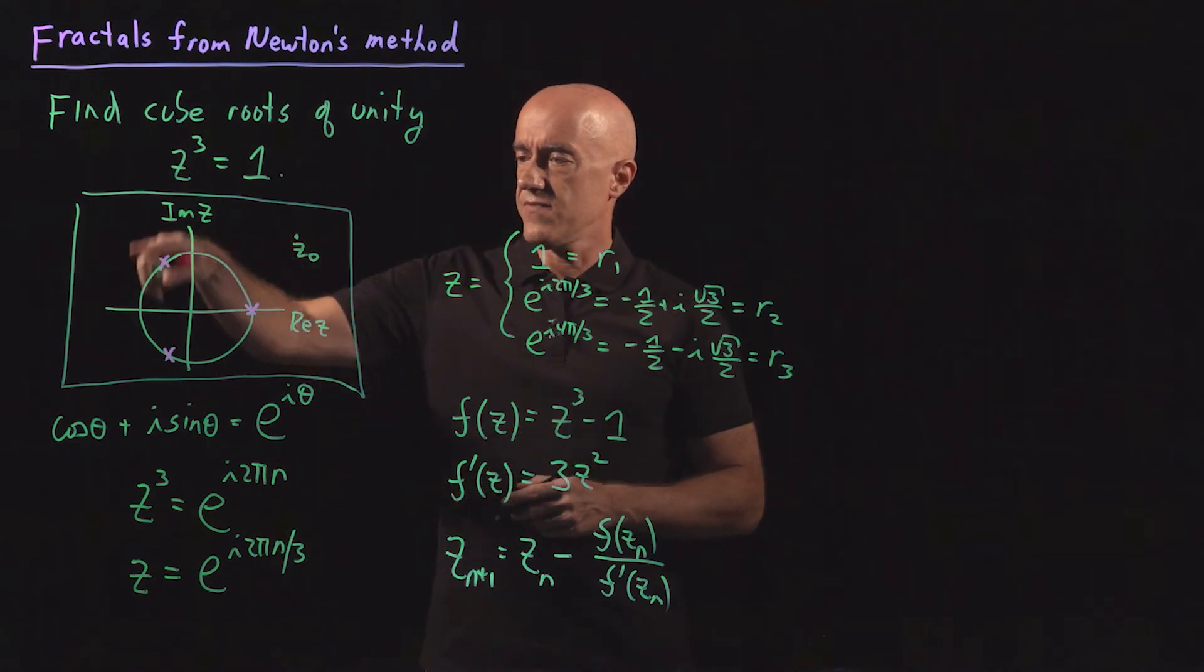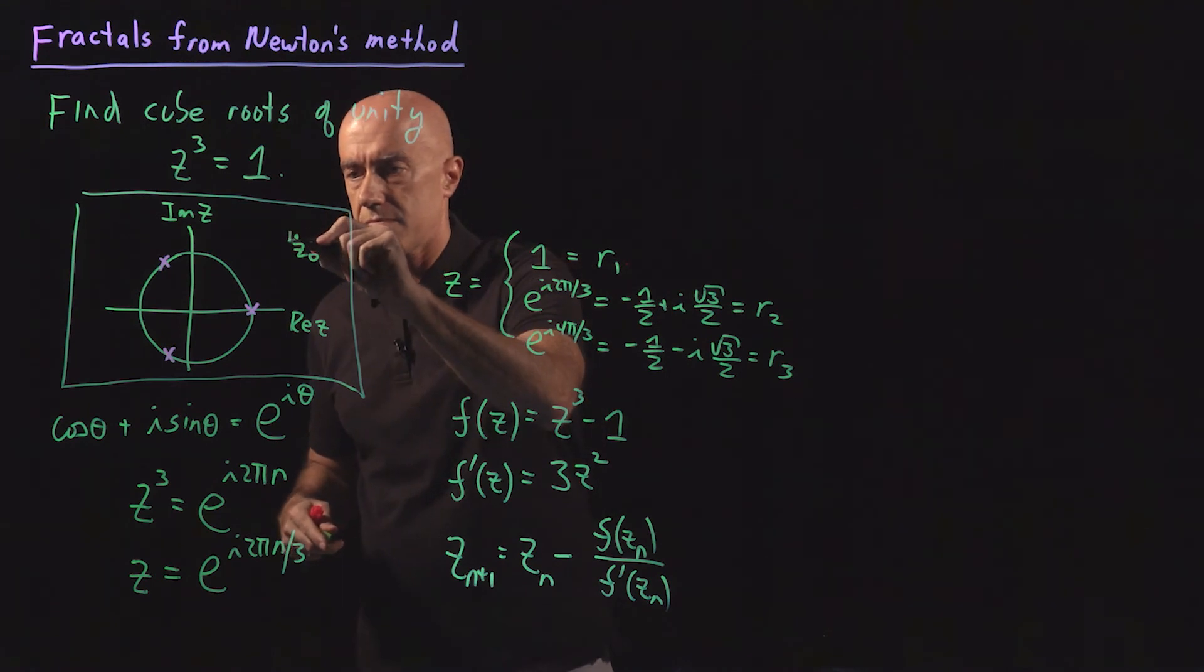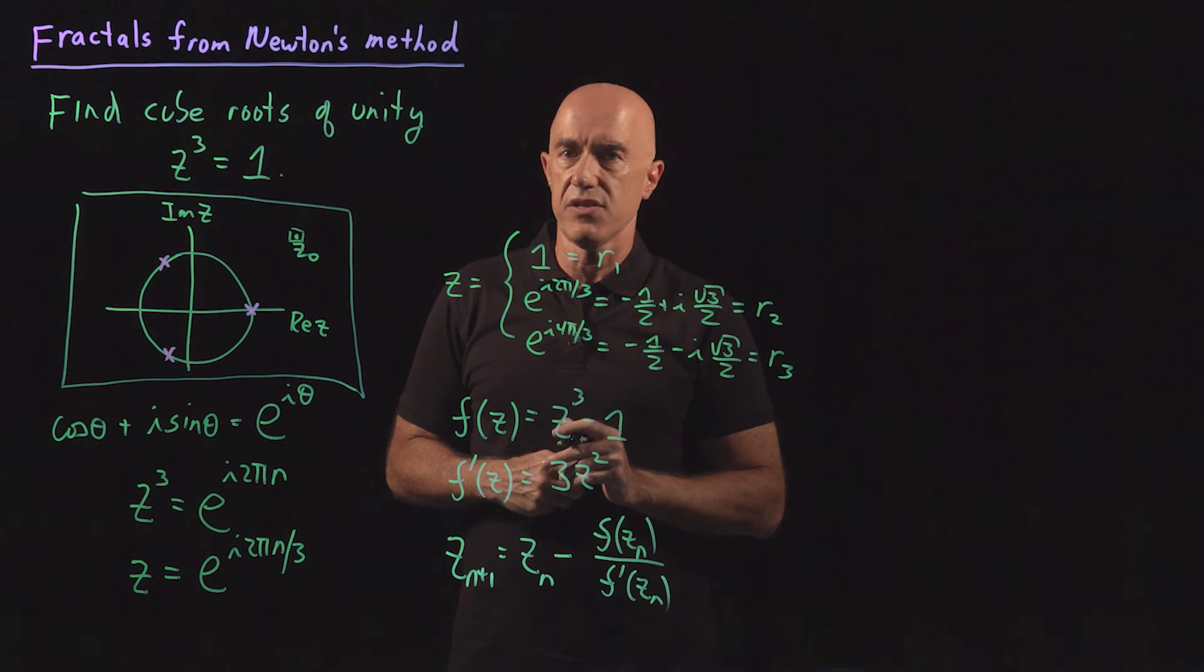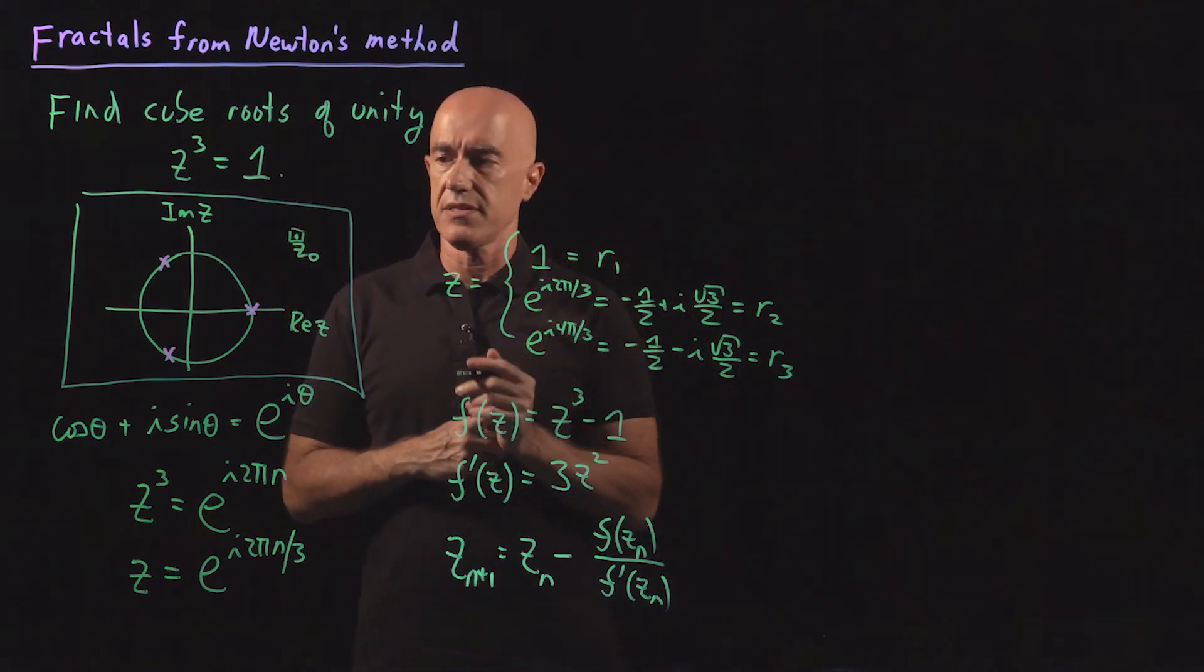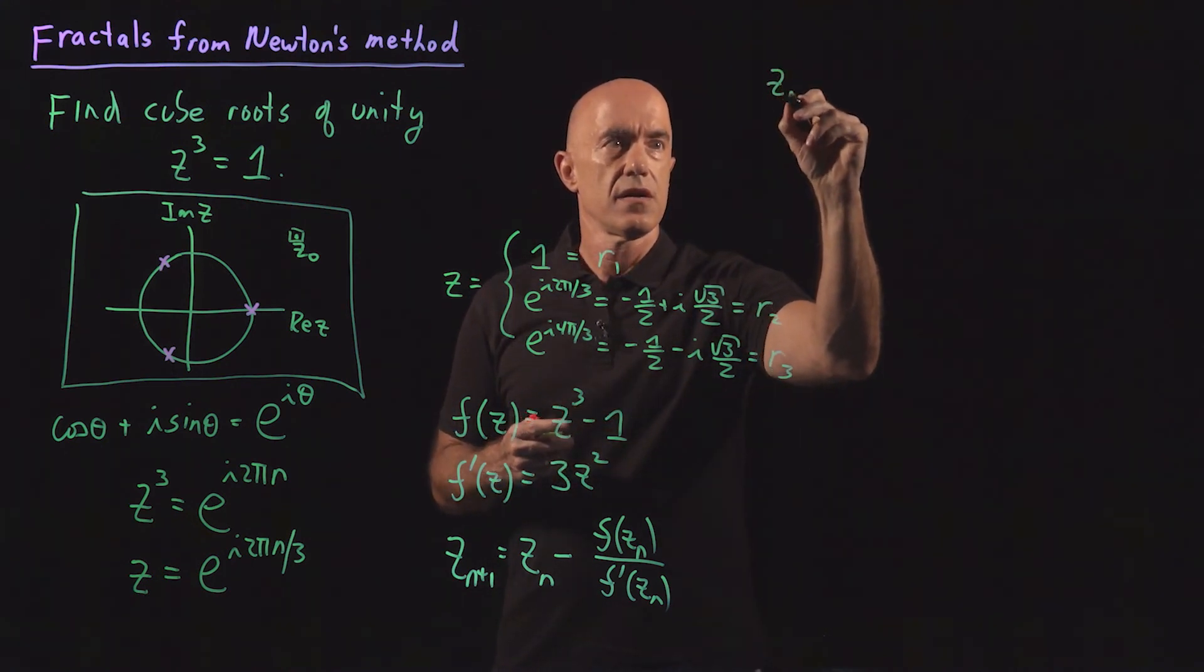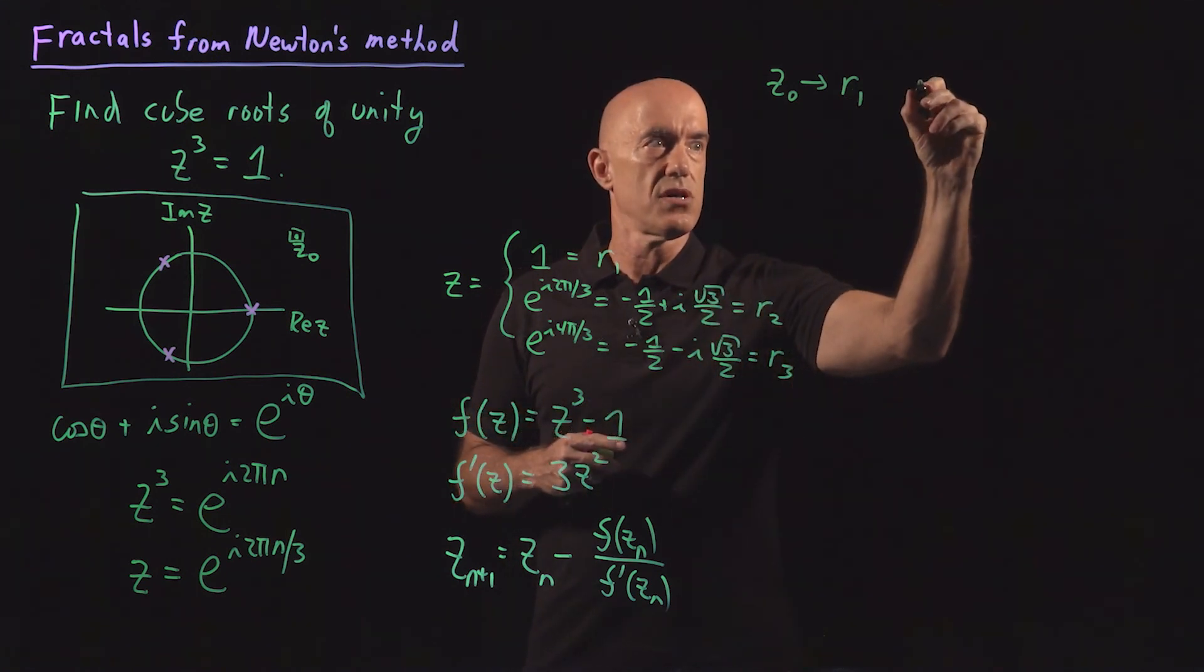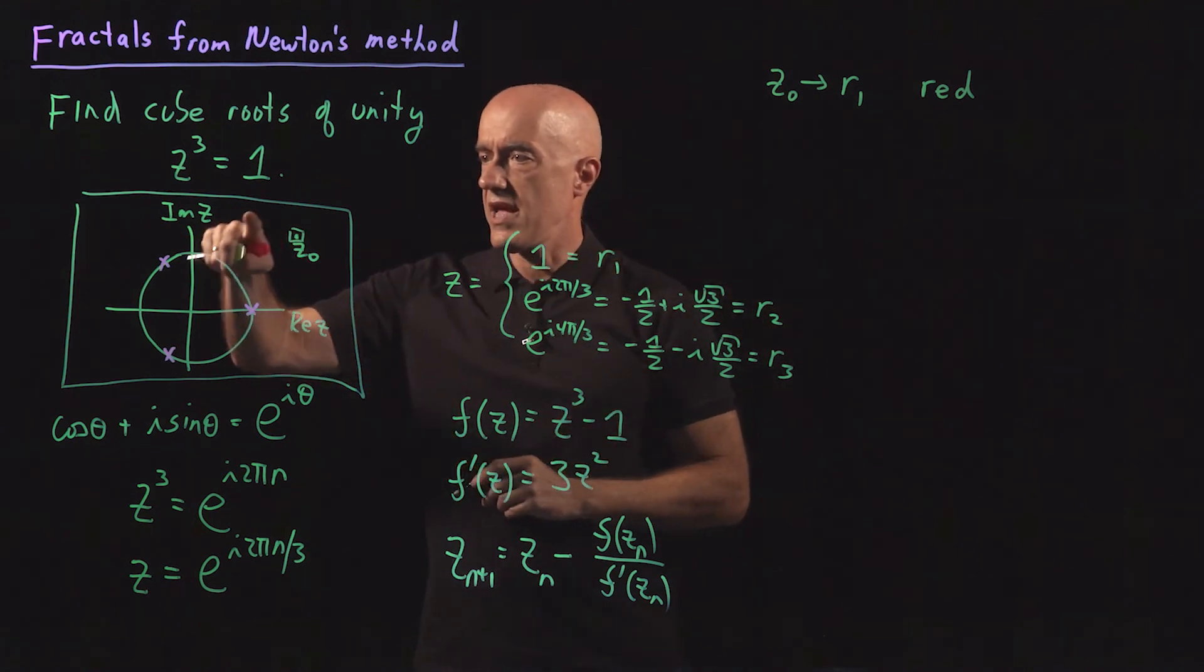If it converges to r1, then we're going to color this pixel representing z naught a certain color. Let's see what our coloring scheme is going to be. If z naught converges to r1, we're going to color the pixel red.